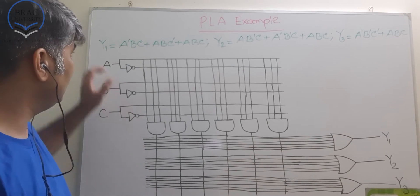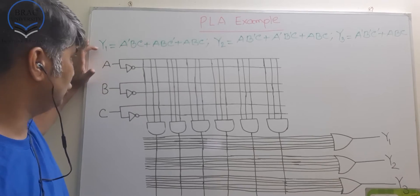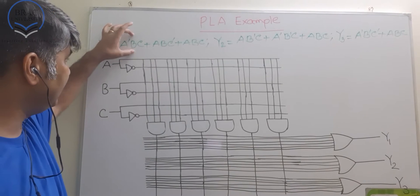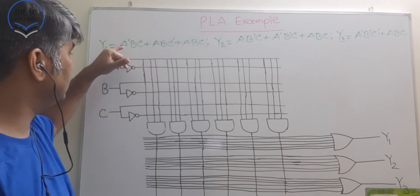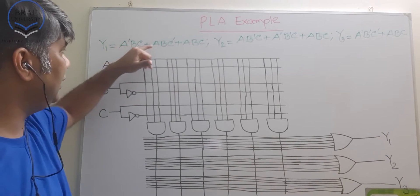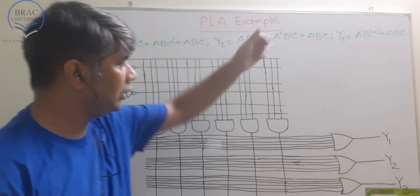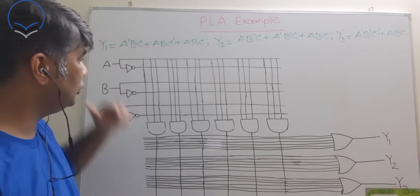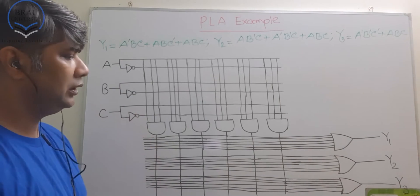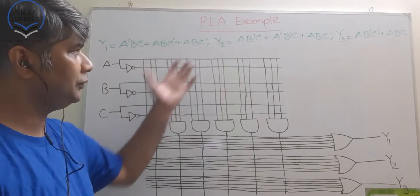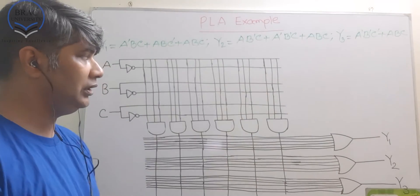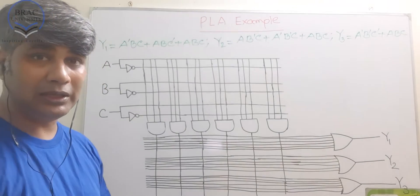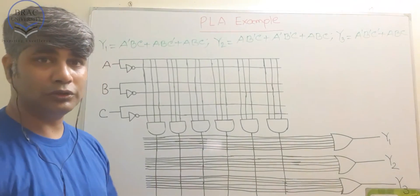As you can see that we have three outputs Y1, Y2 and Y3, and they have AND terms. This one is A'BC, A'BC', A'BC and so on. Since we have the outputs and output combinations, in a straightforward way we can start designing it. But when you are dealing with PLA, then you need to consider one thing.